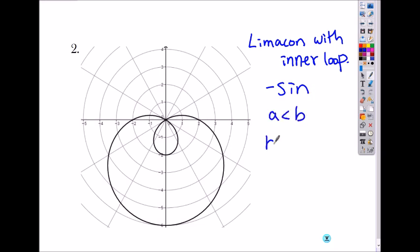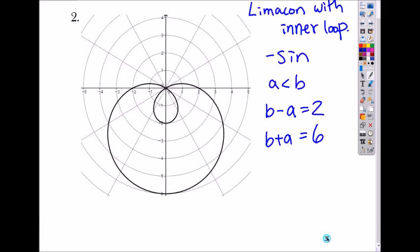And B minus A must be the length of the inner loop, which is two. And B plus A, the sum will be the total length, which is six. So what is A and B? Yeah, four and two. So what's the equation? It is R equals to two minus four sine of theta.